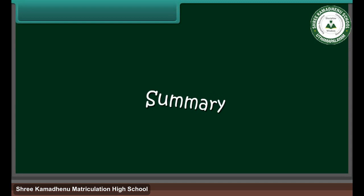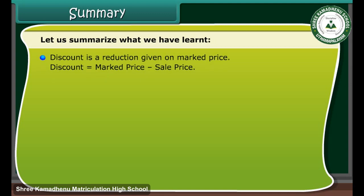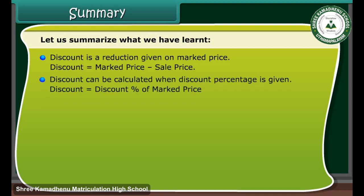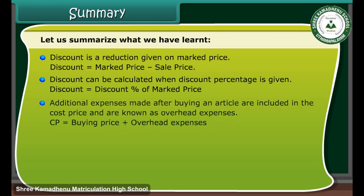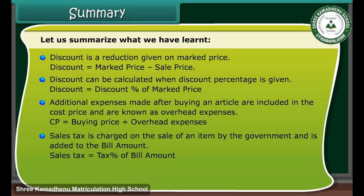Summary: Discount is a reduction given on marked price. Discount is equal to marked price minus sale price. Discount can be calculated when discount percentage is given: discount is equal to discount percentage of marked price. Additional expenses made after buying an article are included in the cost price and are known as overhead expenses. CP is equal to buying price plus overhead expenses. Sales tax is charged on the sale of an item by the government and is added to the bill amount. Sales tax is equal to tax percentage of bill amount.